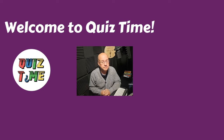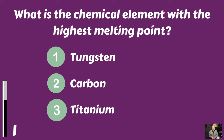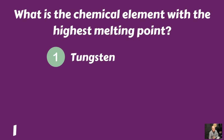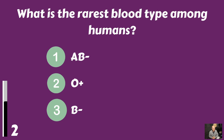Question one: What is the chemical element with the highest melting point? Is it tungsten, carbon, or titanium? That would be tungsten. What is the rarest blood type among humans? Is it AB negative, O positive, or B negative?